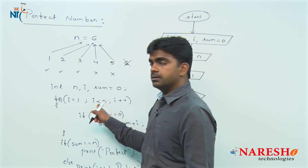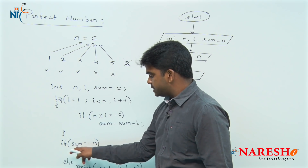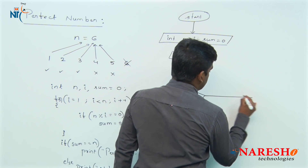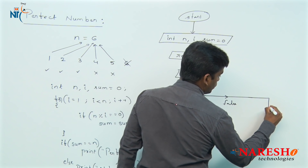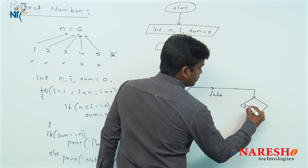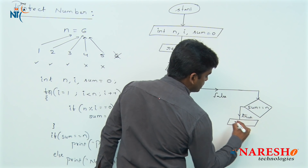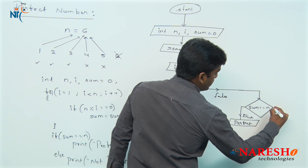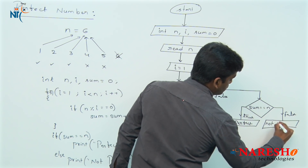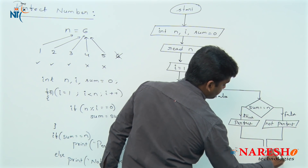If the for loop condition is false, the loop terminates and we check the final if-else condition: if sum equals N, print 'perfect number'; else print 'not a perfect number'. Only one will print, and then the flow ends.